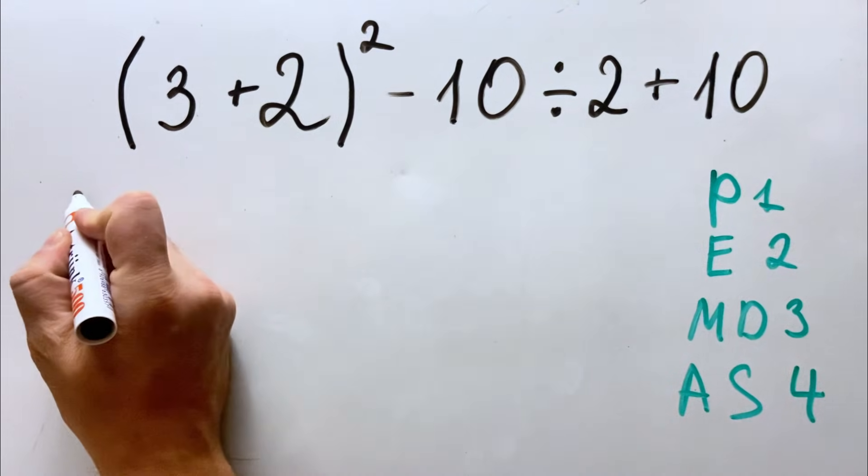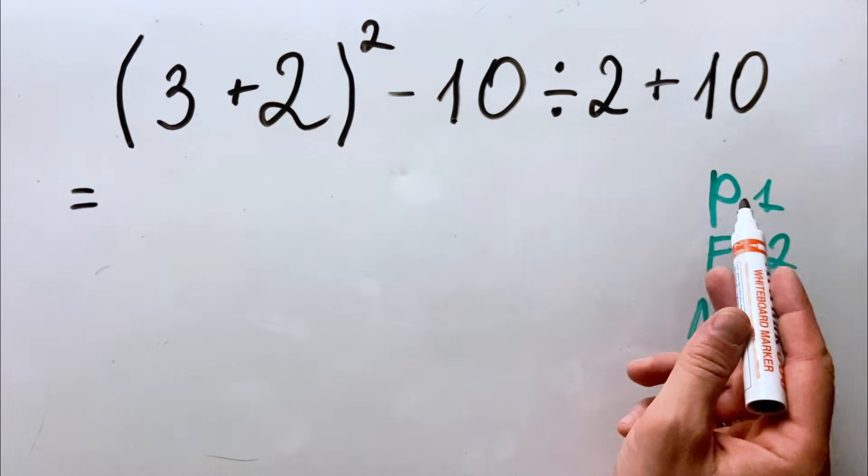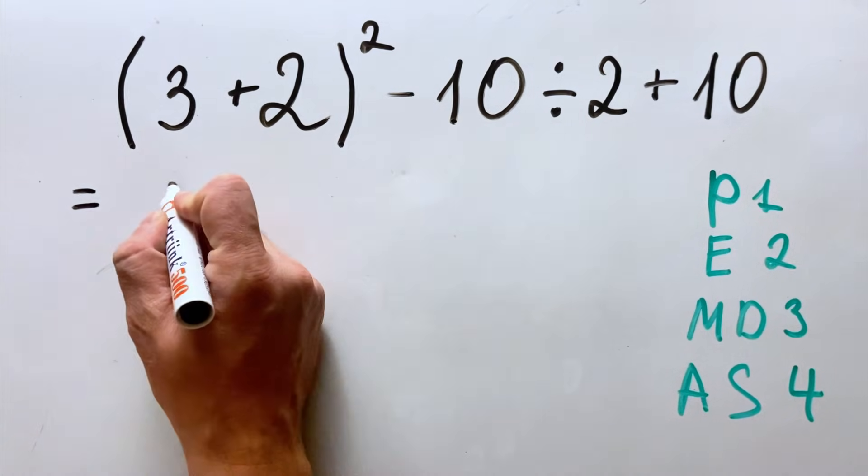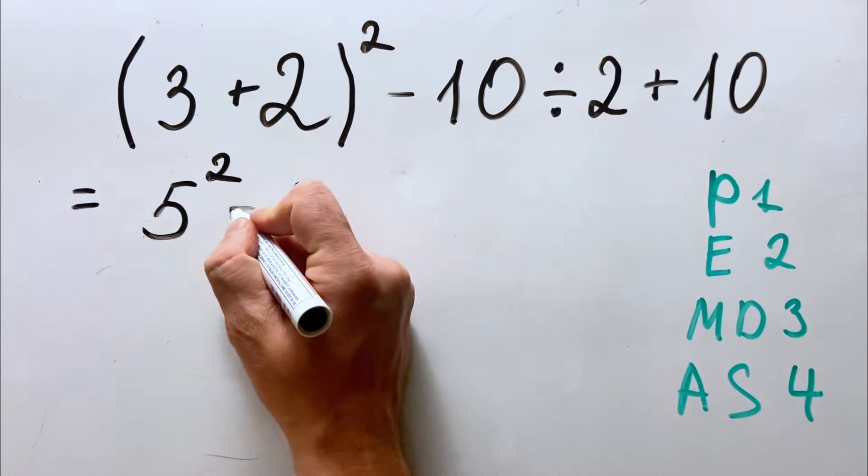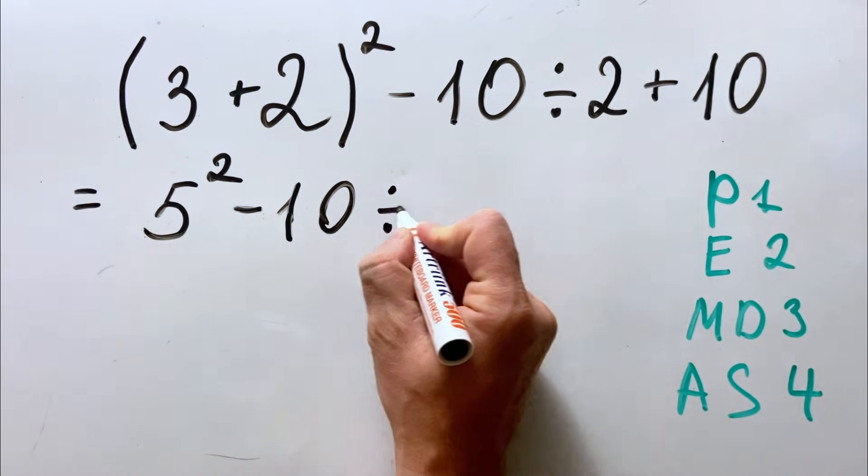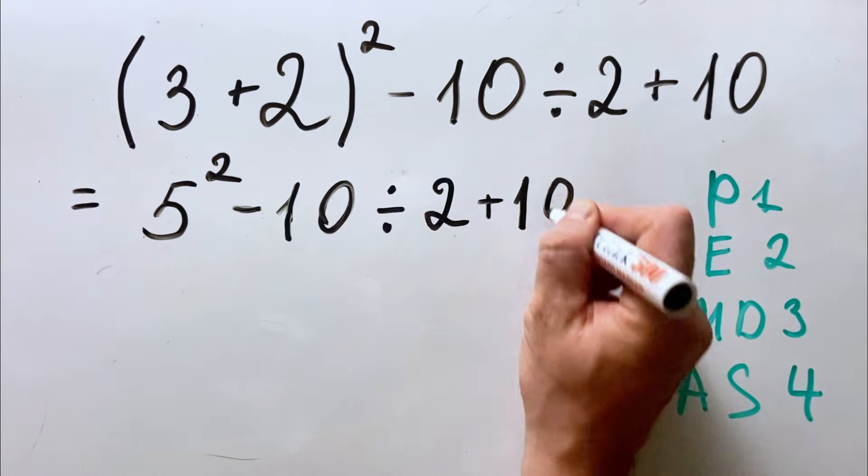Okay, let's go and solve the equation. So we do first what's inside the parentheses. We have 3 plus 2 is 5 squared minus 10 divided by 2 plus 10.